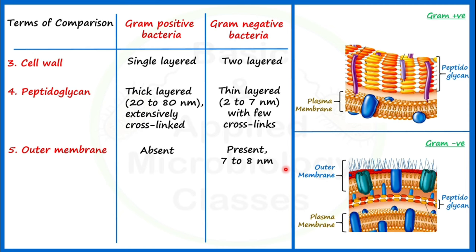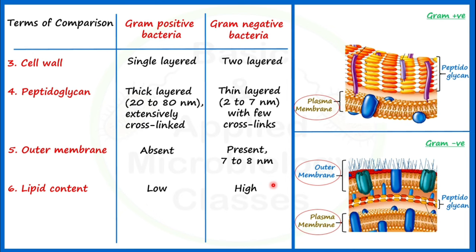Let's see the next point of difference: lipid content. Lipid content is low in case of gram positive bacteria and high in case of gram negative bacteria. Here only one membrane is present, and membrane is chiefly composed of lipids and proteins. In gram negative bacteria, two membranes are present, which are responsible for contributing toward the high lipid content.